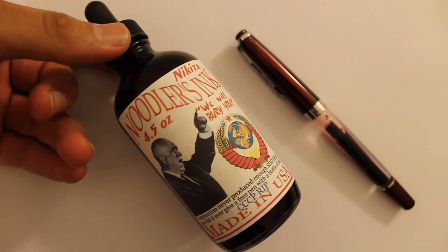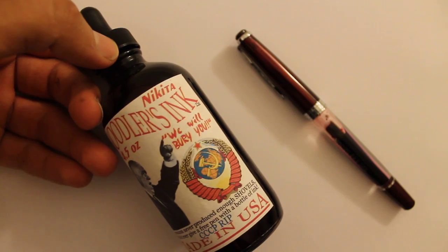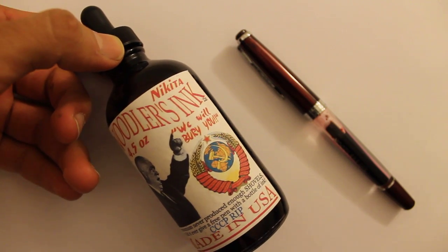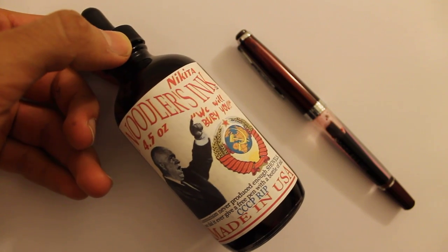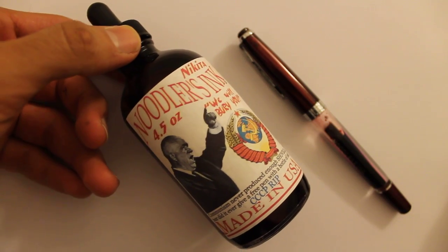Now Noodler's ink is well known. Everyone loves Noodler's but there is one that's difficult to find and it's the Nikita Red. It's a beautiful shade of red. I'll show you now as I'm writing it and it even comes with a free Noodler's fountain pen.